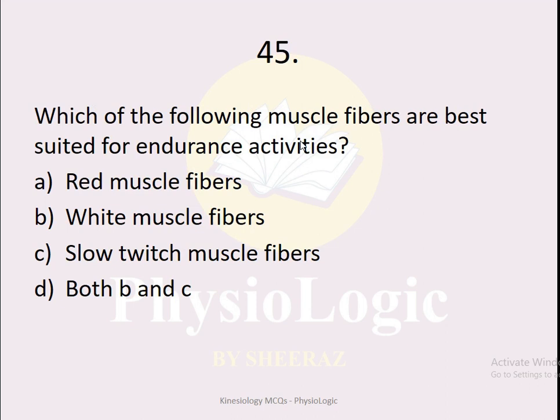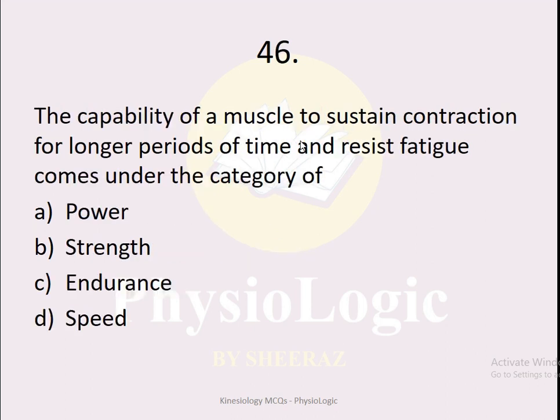MCQ number 45: Which of the following muscle fibers are best suited for endurance activities? Option A red muscle fibers, option B white muscle fibers, option C slow twitch muscle fibers, option D both B and C. The correct option is option D, both B and C — because white muscle fibers are the same as slow twitch muscle fibers, so both options refer to the same fiber type, which is best suited for endurance activities.